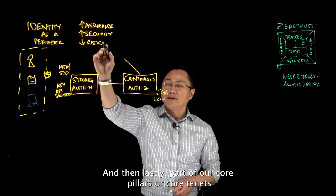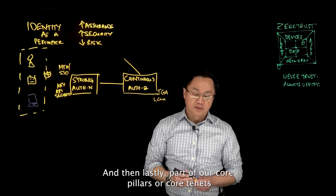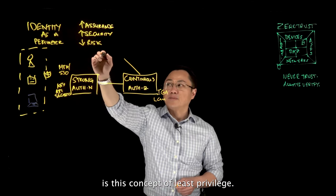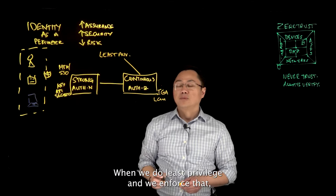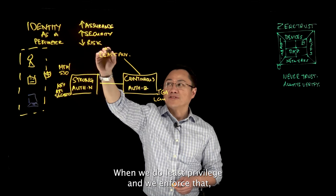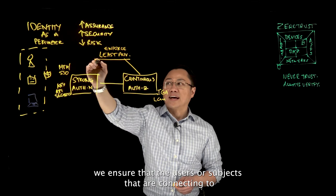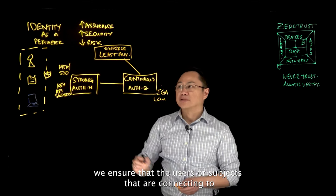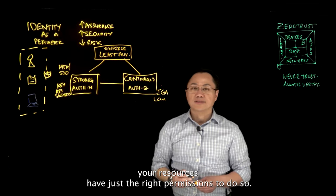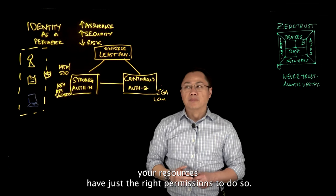And then lastly, part of our core pillars or core tenants, it's this concept of least privilege. When we do least privilege and we enforce that, we ensure that the users or subjects that are connecting to your resources have just the right permissions to do so.